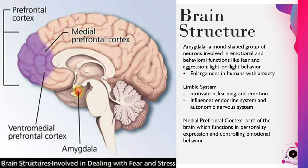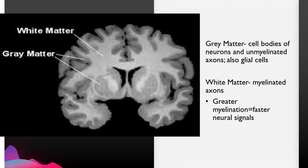We're also going to be looking at the medial prefrontal cortex, whose function is in personality expression and controlling emotional behavior. And we're going to look at the difference between gray matter and white matter in the brain.